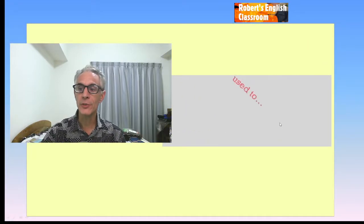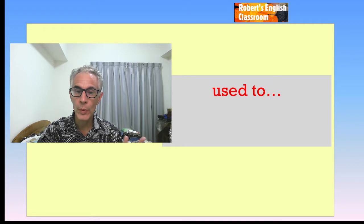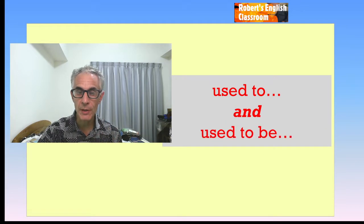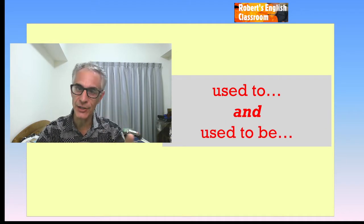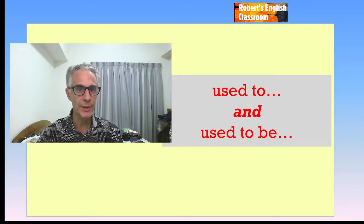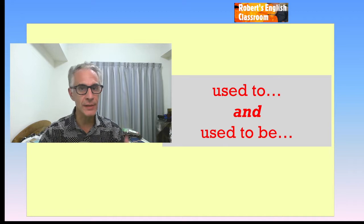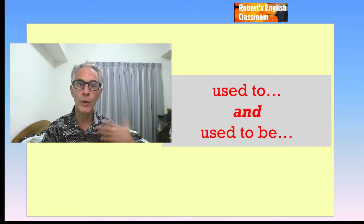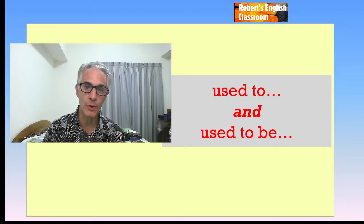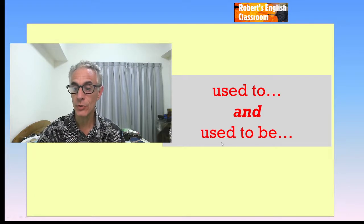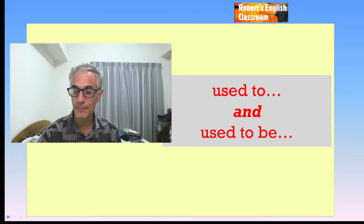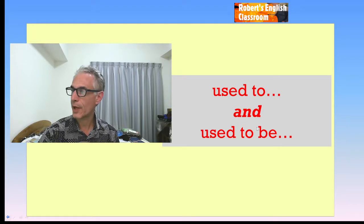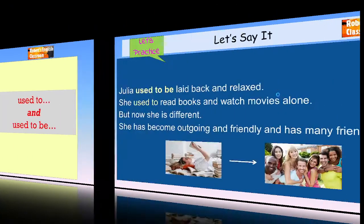So, let's review here. Used to. We put a verb after it. Used to base verb. And used to be with an adjective. So, used to plus a base verb and used to be an adjective. And what does it mean? It means we did something before and we don't do it now. Or we had a certain personality before, but we don't necessarily do it now. Everybody got that?